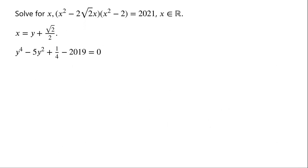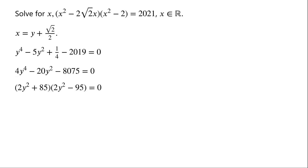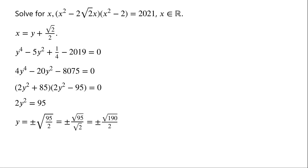Multiplying the equation by 4, we have 4y^4 − 20y² − 8075 = 0. The left-hand side factorizes as (2y² + 85)(2y² − 95). Since 2y² + 85 is always greater than zero, we need 2y² − 95 = 0, giving 2y² = 95. So y = ±√(95/2) = ±√95/√2 = ±√190/2. Since x = y + √2/2, we get x = (√2 ± √190)/2.